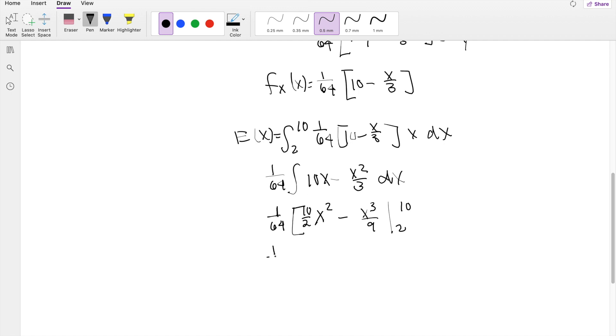Putting in the numbers here, 1 over 64, when you do 10 squared, that's 100, 100 times, this is just basically 5, that's 500 minus 1,000 over 9 minus, this is equal to 2 squared, that's 4, 4 times 5, that's 20, plus 2 cubed, that's 8 over 9.